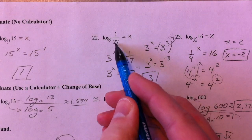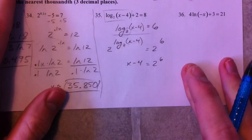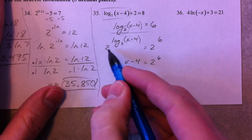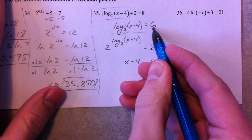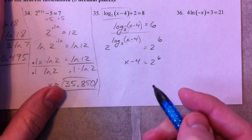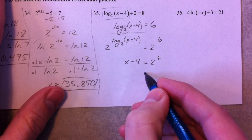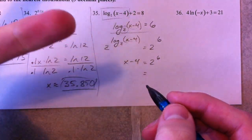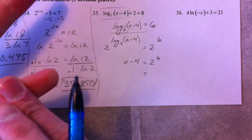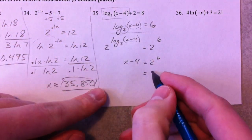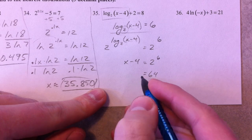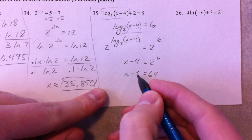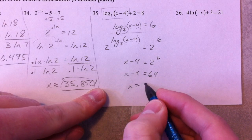3 to the x power is 1 over 27. 2 to the 6 power equals x minus 4. So now 2 to the 6 power: 4, 2, 4, 8, 16, 32, 64. And so then x minus 4—add 4 to it—and you get 68.